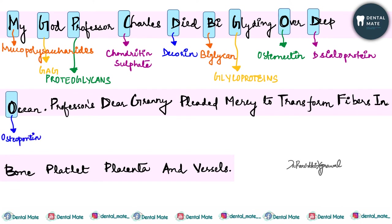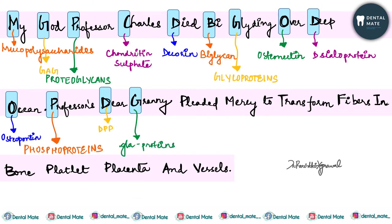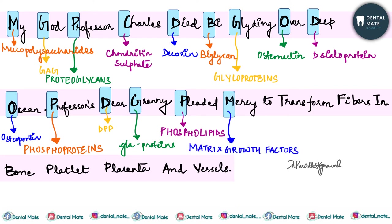Under mucopolysaccharides also come phosphoproteins — these include DPP and gamma carboxyglutamate-containing proteins (GLA proteins) — and phospholipids as a separate point. So in summary, under mucopolysaccharides there are five things: glycosaminoglycans (GAG), proteoglycans, glycoproteins, phosphoproteins, and phospholipids.